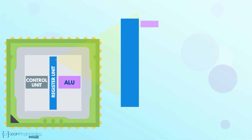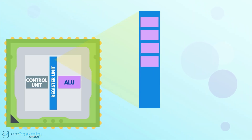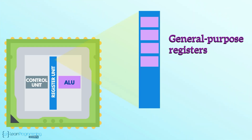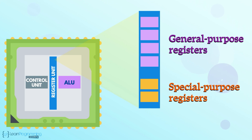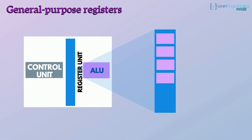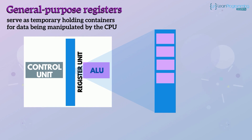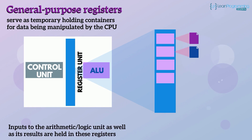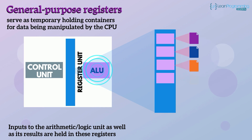The CPU really is an amazing and fascinating device. Some of the registers within the register unit are considered general purpose registers, and others are special purpose registers. General purpose registers serve as temporary holding containers for data being manipulated by the CPU. Inputs to the arithmetic logic unit, as well as the results, are held in these registers.